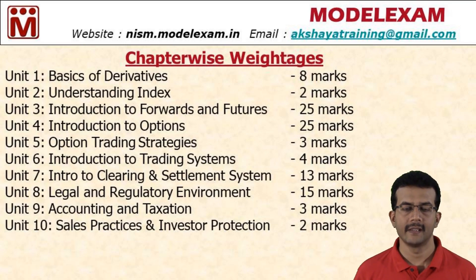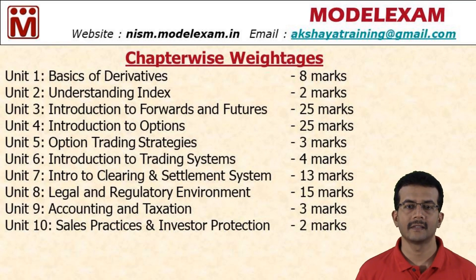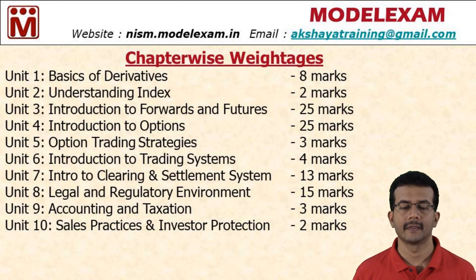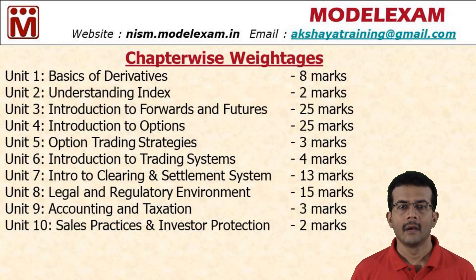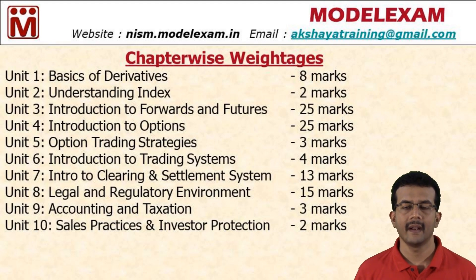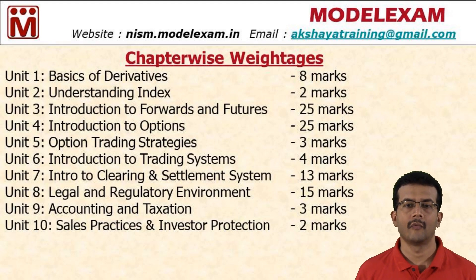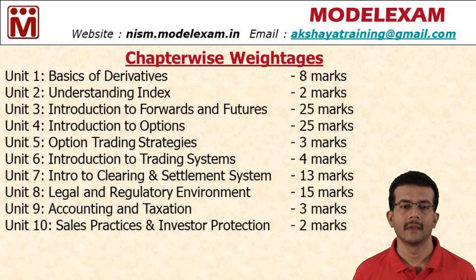This slide has information about the weightages assigned for each chapter in NISM Equity Derivatives. It has 10 units, and the major units are Unit 3, Unit 4, Unit 7, and Unit 8. Unit 3, Introduction to Forwards and Futures, carries 25 marks. Unit 4, Introduction to Options, carries 25 marks.